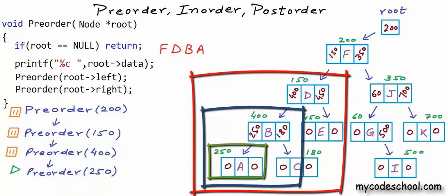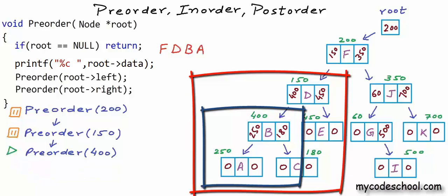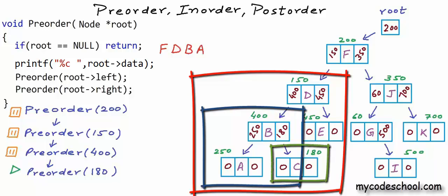Preorder(250) finishes and preorder(400) resumes, making another recursive call to preorder(180). We print the data for node at 180, then make two recursive calls passing address 0 each time since node 180 has no children — both simply return. The recursion continues this way. Even though we are not using extra memory explicitly in our function, because of the recursion we are growing the function call stack.